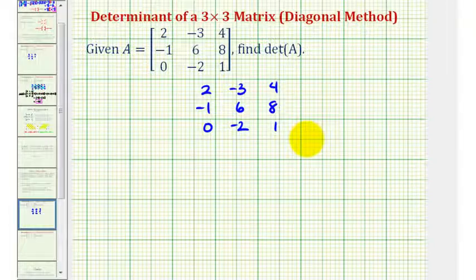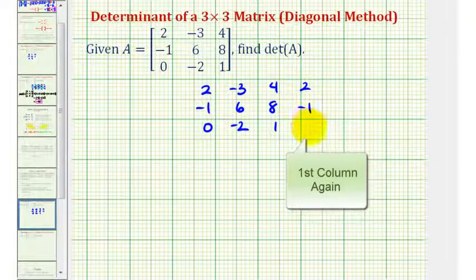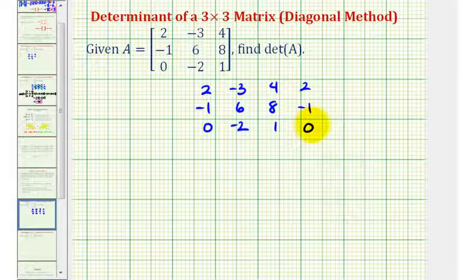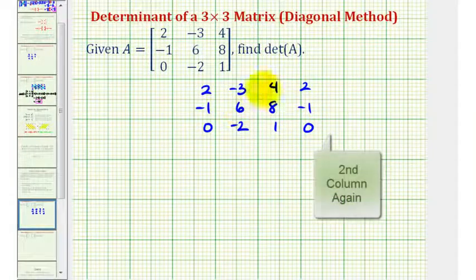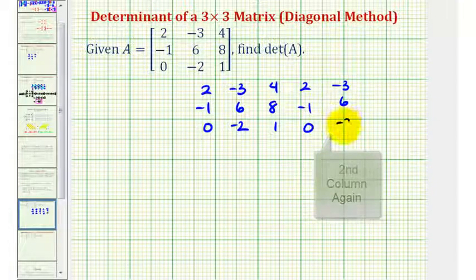The fourth column will be the same as the first column, so we'll have two, negative one, zero. And the fifth column is the same as the second column, so we'll have negative three, six, and negative two.